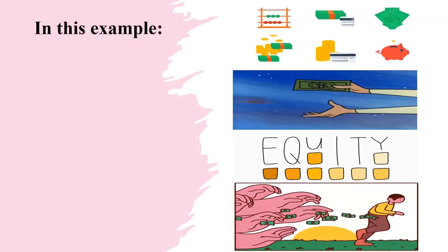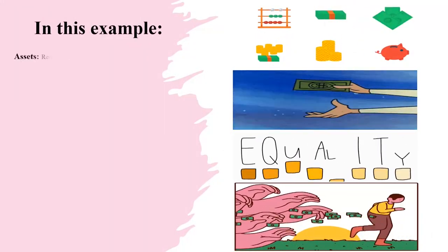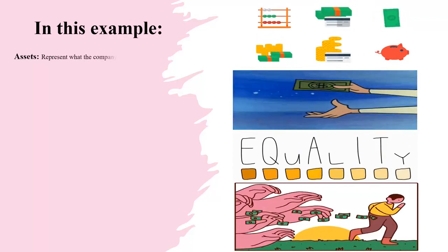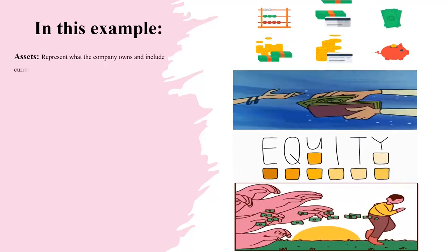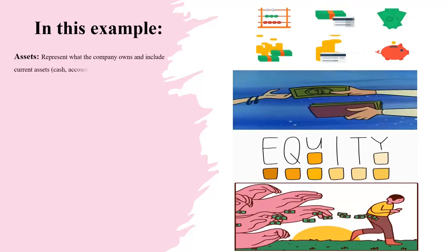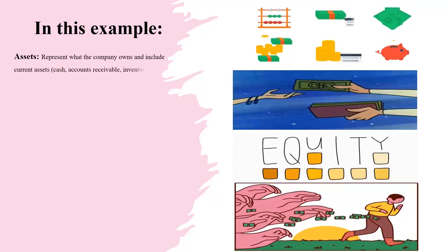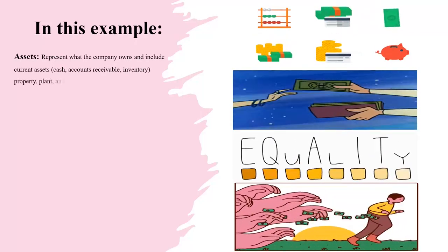In this example, assets represent what the company owns and include current assets, cash, accounts receivable, property, plant, and equipment.